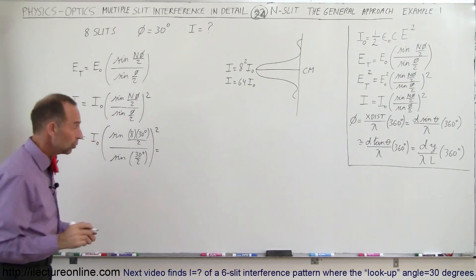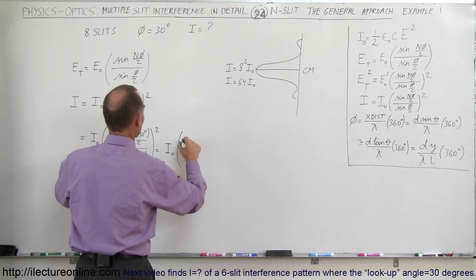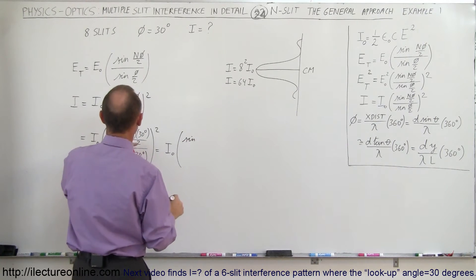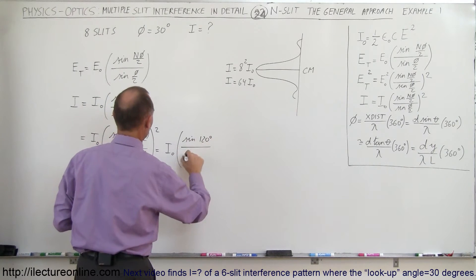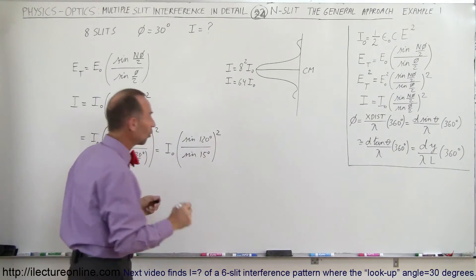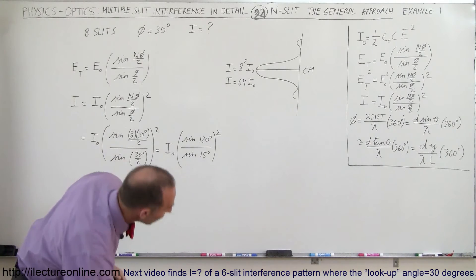So this is equal to i sub-naught times that would be the sine of 4 times 30 or 120 degrees divided by the sine of 15 degrees and the quantity squared. So even if we get a negative number there, since we're squaring it, it will always be a positive quantity.